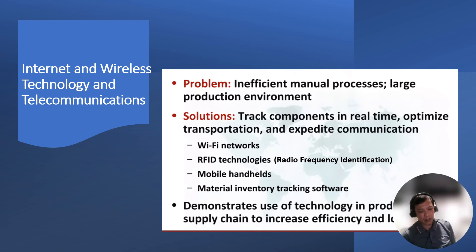The reader is a device that has two or more antennas that emit radio waves and receive signals back from the RFID tag. Mobile handles such as mobile phones, smartphones, digital media players, mobile computers, and other handheld devices. Material inventory tracking software is software used to track inventory levels, sales, and deliveries. It demonstrates the use of technology in the production supply chain to increase efficiency.